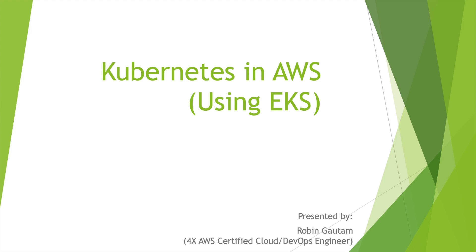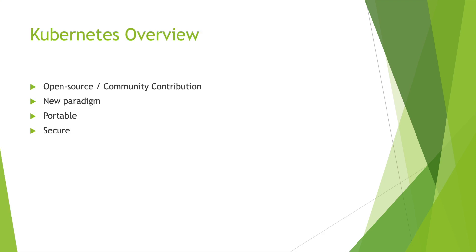Hello everyone, welcome back to the Cloud et YouTube channel. In this video we are going to learn how to use Kubernetes on AWS. We will start with some basics of Kubernetes and move to Elastic Kubernetes Service, also known as Amazon EKS, then deploy our application in Amazon EKS. I am Robin Gotham, an AWS certified cloud and DevOps engineer, and I'll be your presenter today.